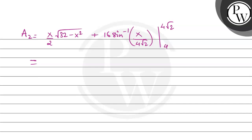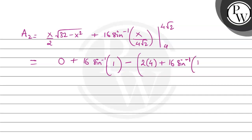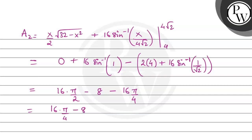Applying the upper limit x equals 4 root 2: (4 root 2 / 2) times square root of (32 minus 32) gives 0, plus 16 times sin inverse of 1, which is pi/2. Applying the lower limit x equals 4: (4/2) times square root of (32 minus 16) equals 2 times 4 equals 8, plus 16 times sin inverse of (1/root 2), which is pi/4. So A2 equals 16(pi/2) minus 8 minus 16(pi/4), which simplifies to 4pi minus 8 square units.